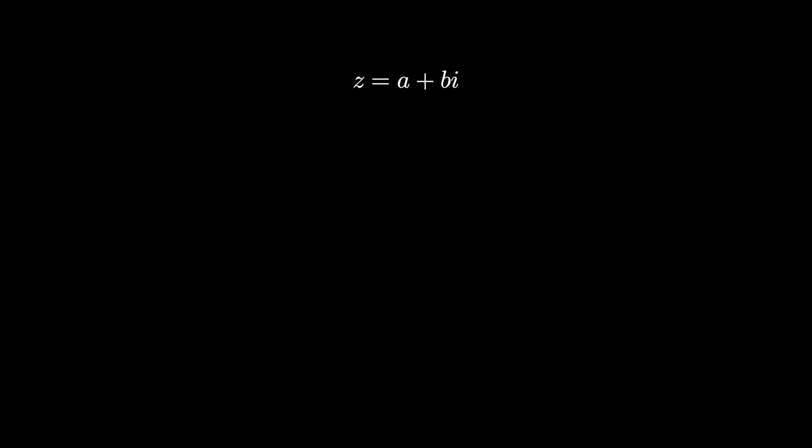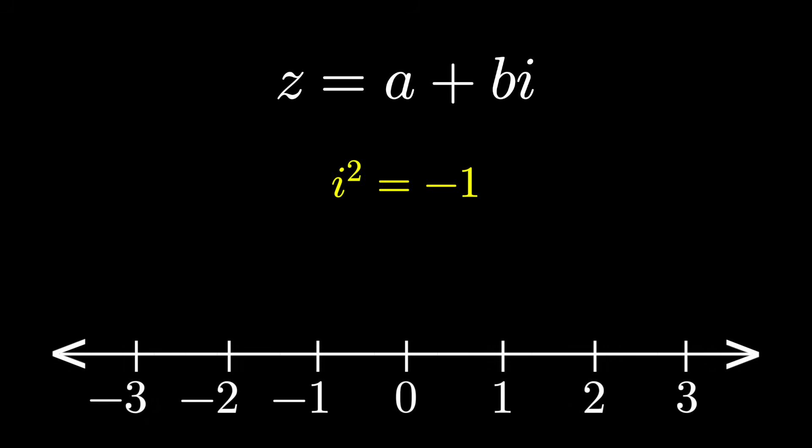Imagine you're in algebra class and your teacher is going on about imaginary numbers. I squared is negative one, and something about multiplying by i being a rotation of 90 degrees.